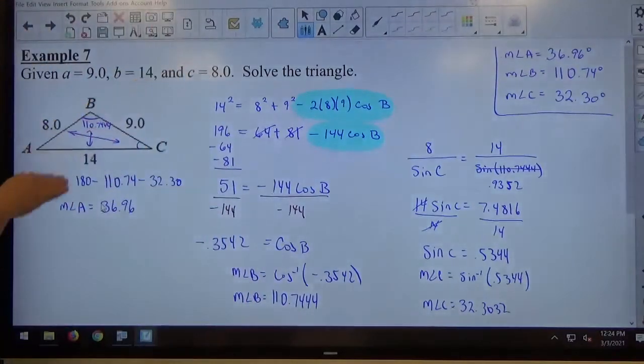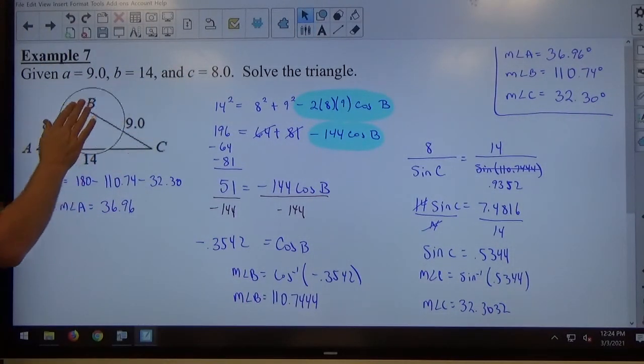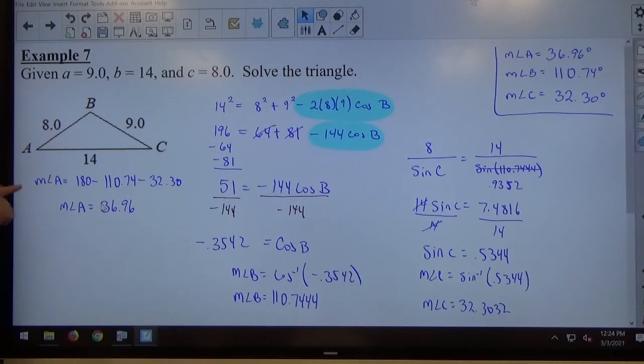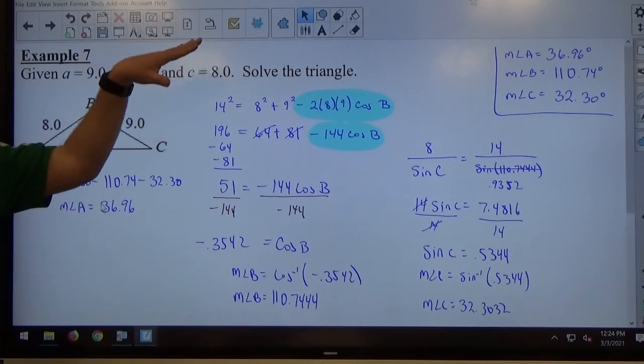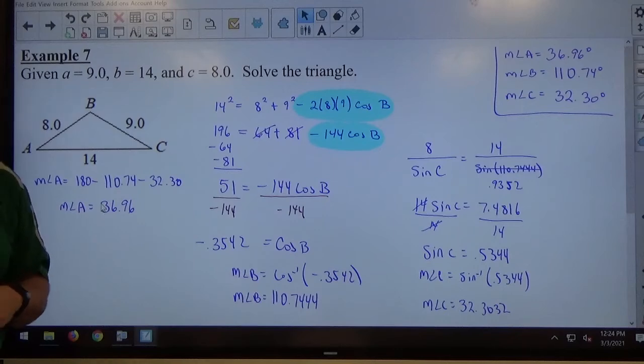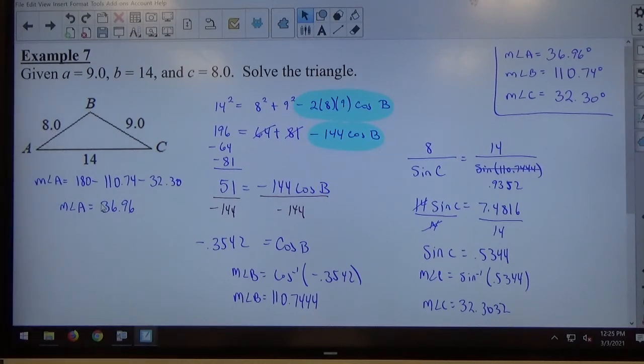Got a nice little answer box over there. And just a quick check here to verify that my answers do seem to be reasonable for what I've got. C is the smallest angle because it's opposite the smallest side. And you can see C is smaller than the other two. Angle A should be in the middle, 36.96 is in between. And then B should be the biggest. It's opposite the biggest side, so it's the biggest. So the angles are in the proper proportion of size compared to the side measures opposite. So that's usually my quick check. If the angles are in the right relationship there, I'm going to assume I did everything correctly. Obviously, if you transpose a number here or there, you still get a wrong answer. But that's a pretty easy little quick check to give you pretty good peace of mind there.